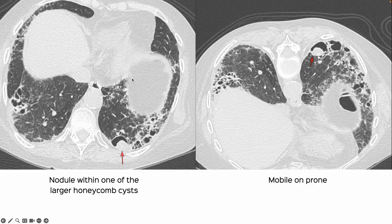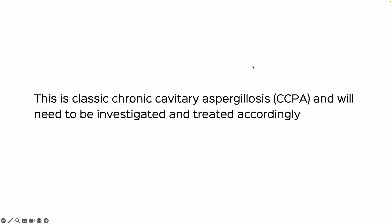When we scrolled through the entire study, I found that one of these cysts has a nodule along the posterior aspect. Since we do prone imaging in every patient, the nodule is mobile and has dropped to the dependent portion in the prone image — this is absolutely characteristic of a fungal ball, and therefore chronic cavitary aspergillosis, or CCPA.